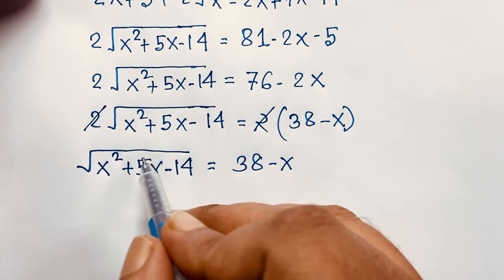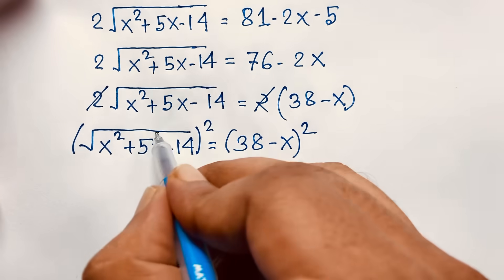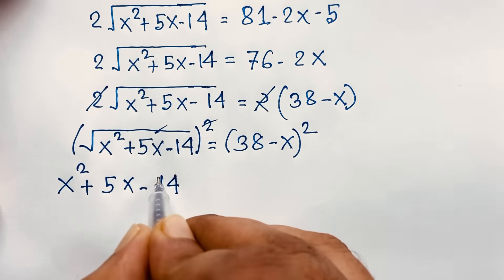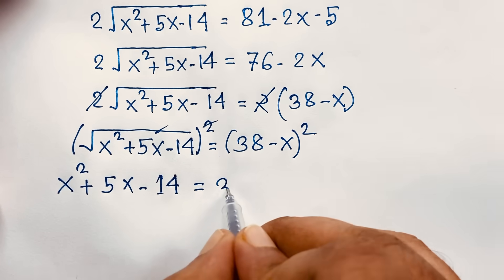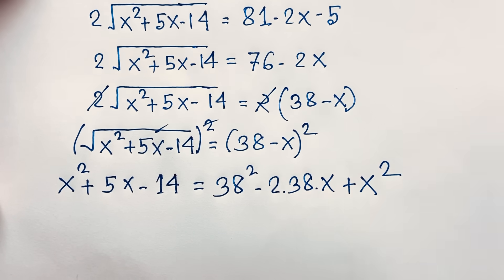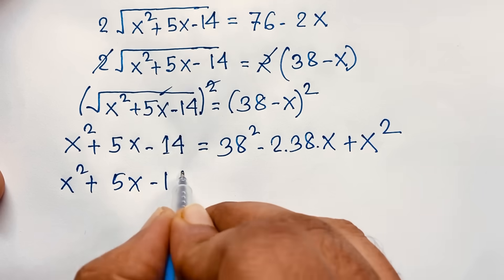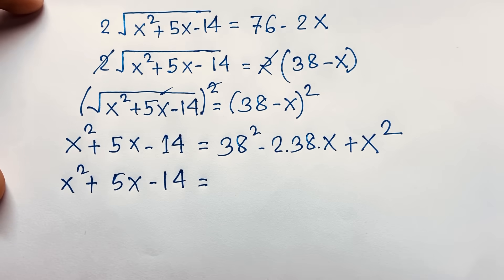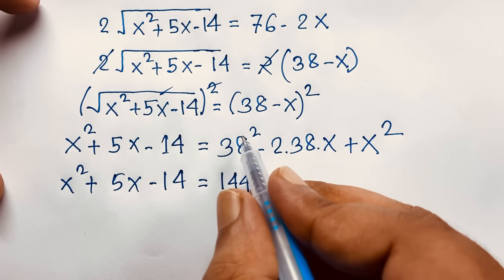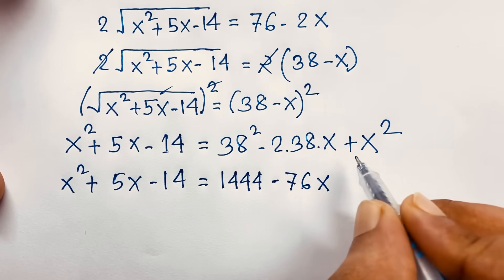Now I need to remove this square root, so I square both sides. The square root cancels out, giving us x squared plus 5x minus 14 on the left. On the right, (38 minus x) squared — applying (a minus b) whole square — gives 38 squared minus 2 times 38 times x plus x squared. 38 squared is 1444, and 2 times 38 is 76x.